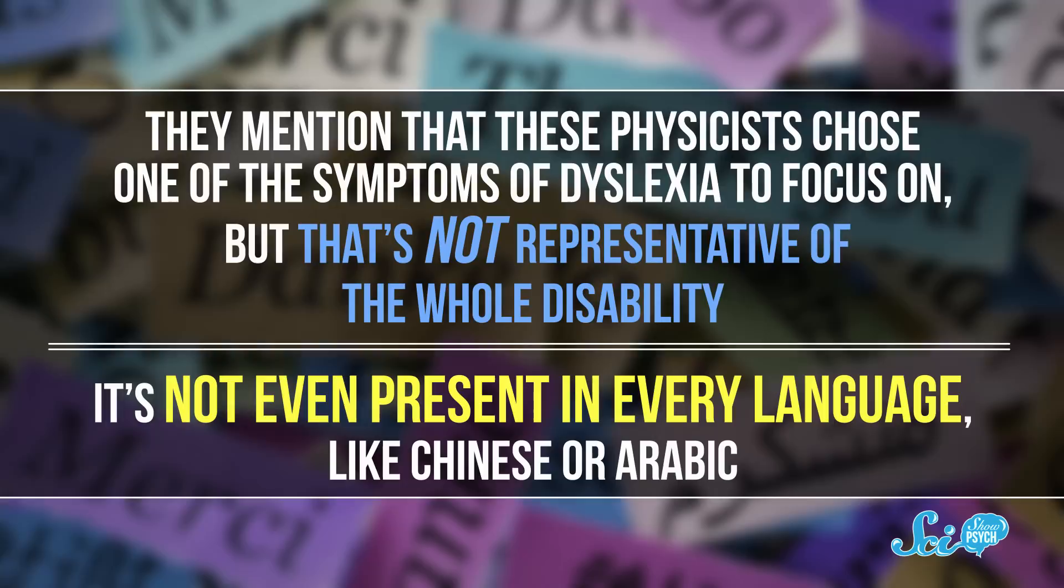But here's the thing. Other scientists who specialize in dyslexia research have many critiques of this study. For instance, they mentioned that these physicists chose one of the symptoms of dyslexia to focus on — the mirrored letters — but that's not representative of the whole disability. It's not even present in every language, like Chinese or Arabic.